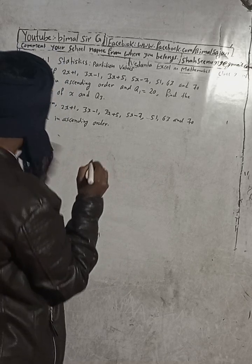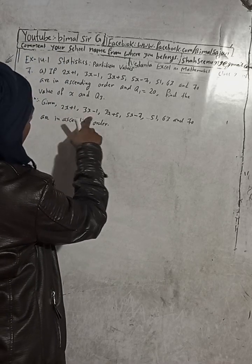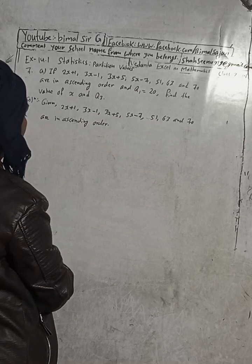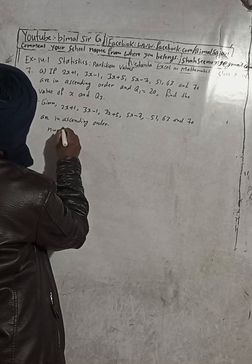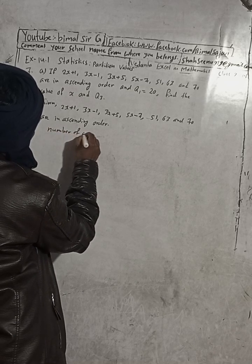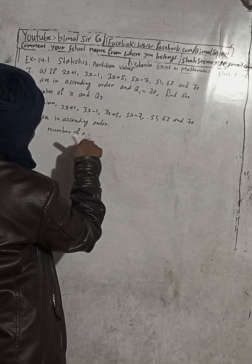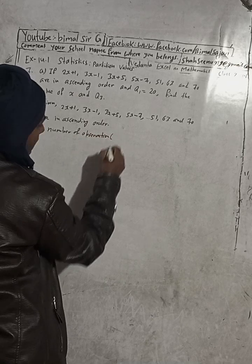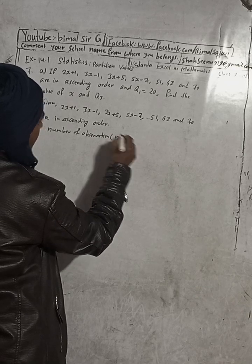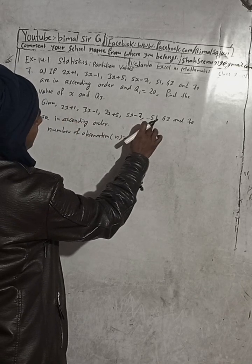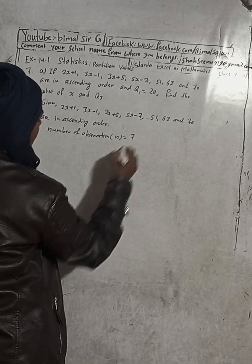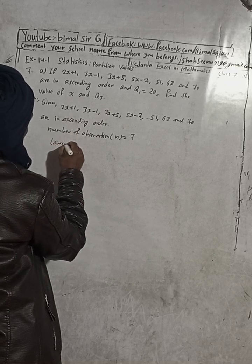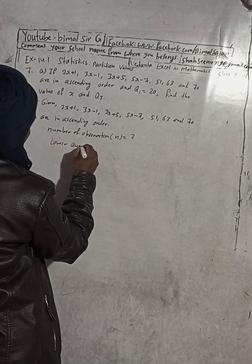So this is the first, second, third, fourth, fifth, sixth, seventh value. Therefore, the number of observations, indicated by small n, is equal to 1, 2, 3, 4, 5, 6, 7 — so n equals 7. And the lower quartile Q1 is given as 20.